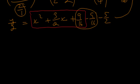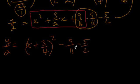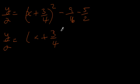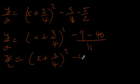So we rewrite y over 2: the first three terms become (x plus 3 over 4) all squared, and then we're left with minus 9 sixteenths and minus 5 halves. Combining those with a common denominator of 16: minus 9 minus 40 over 16 gives us minus 49 over 16. So y over 2 equals (x plus 3 quarters) squared minus 49 over 16.